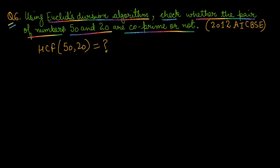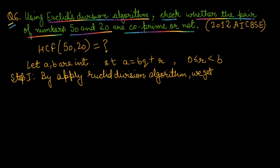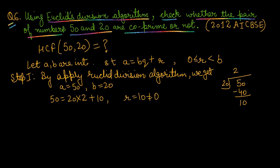Euclid's division algorithm states: for integers A and B, A = BQ + R, where Q is the quotient and R is the remainder, and 0 ≤ R < B. Applying this: 50 = 20 × 2 + 10. Since remainder is 10 (not 0), we apply the algorithm again: 20 = 10 × 2 + 0. Remainder is now 0.